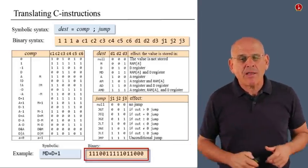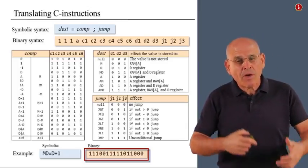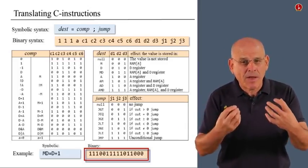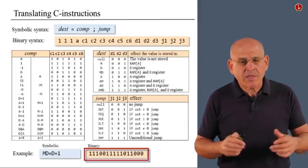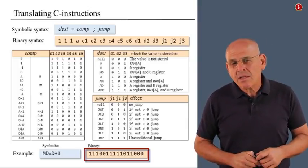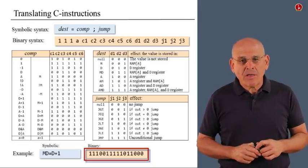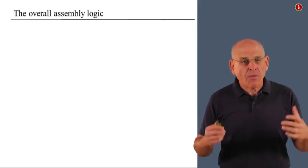And later on, we are going to load this text file into the computer. And once we load it into the computer, it becomes real zeros and ones, so to speak. All right, so this basically concludes the translation of C instructions.